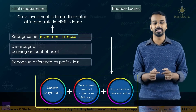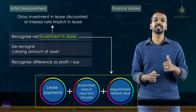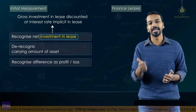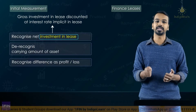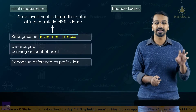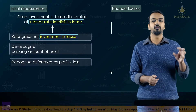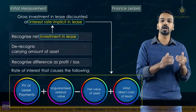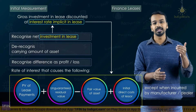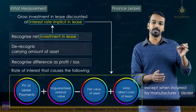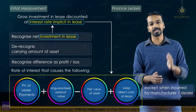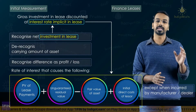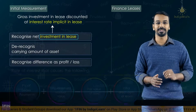When you discount the gross investment in lease using the implicit rate in the lease, what you get is the net investment in lease. As far as the implicit rate is concerned, for a manufacturer and dealer lessor, you do not consider the initial direct cost to calculate the implicit rate. In other cases, you do consider the initial direct cost to calculate the implicit rate.